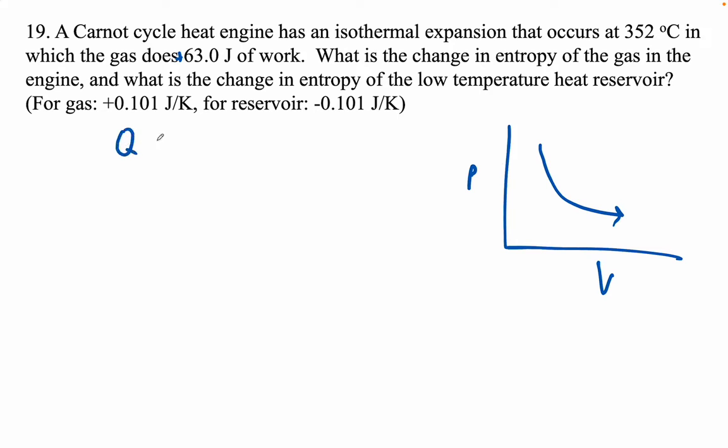So Q equals delta U plus work. Since it's isothermal, the temperature doesn't change, so this is zero. There's no change in internal energy. And then the work is positive 63. So therefore, if it's going to do work, we've got to provide energy. So the heat flow is positive 63.